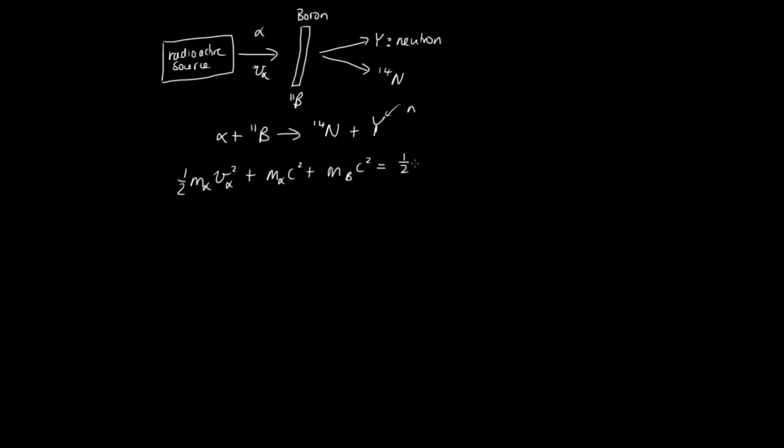Afterwards we've got our neutron and our nitrogen. Let's give it the symbol little n now. We've got the half times the mass of the neutron times the velocity of the neutron squared, plus a half times the mass of nitrogen times the velocity of nitrogen squared, plus mass of the neutron c squared, the rest mass energy of the neutron, plus the rest mass energy of the nitrogen. This is our energy conservation equation.